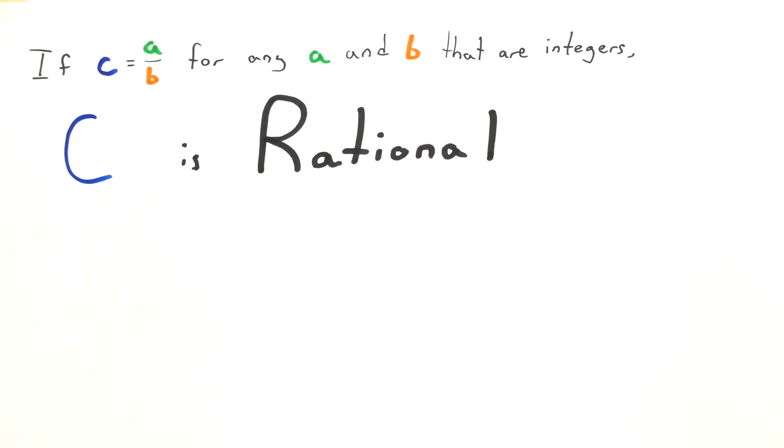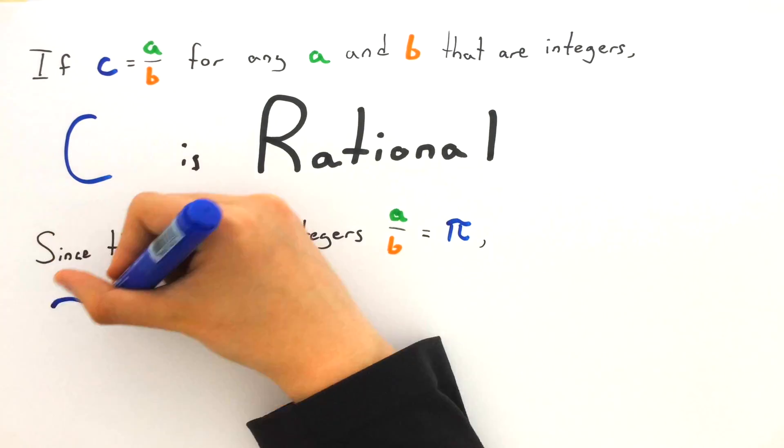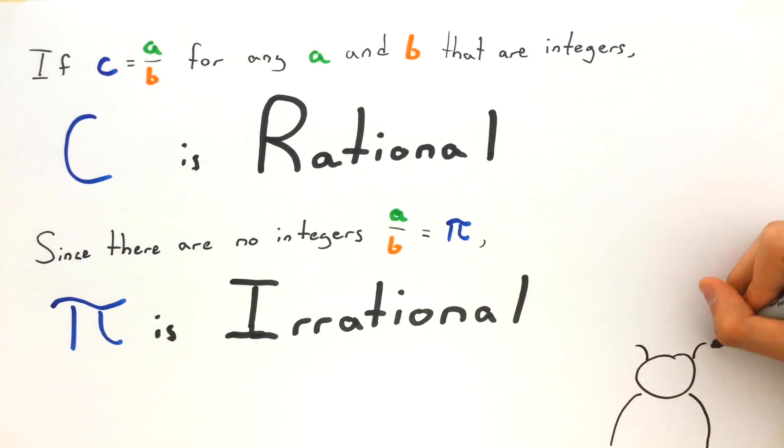Since there are no integers a over b equal to pi, pi is irrational. So our baker is sadly out of luck.